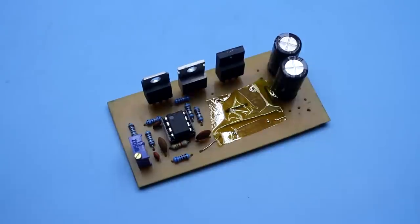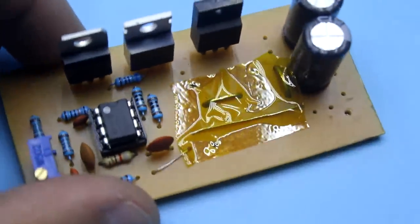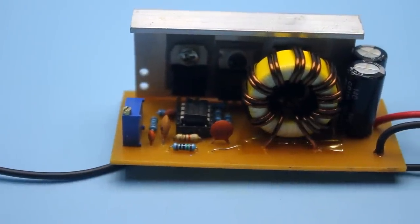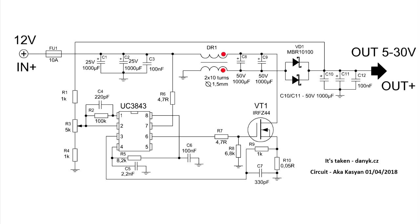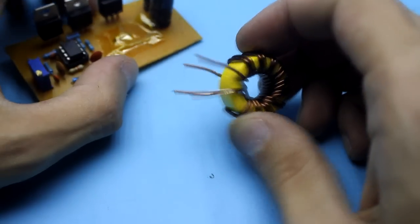Before installing the choke, jumpers should be sealed with Kapton tape. The operation of the circuit depends on the correct installation of the choke. You must keep an eye on the beginning of the windings and simply set it as shown in the video.